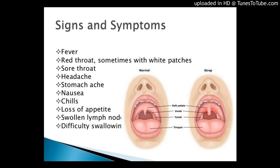Disease Trends. The rate of serious group B strep disease among non-pregnant adults increases with age. The rate of invasive disease is about 10 cases out of every 100,000 non-pregnant adults. However, 25 out of every 100,000 adults 65 years or older will get group B strep disease each year.